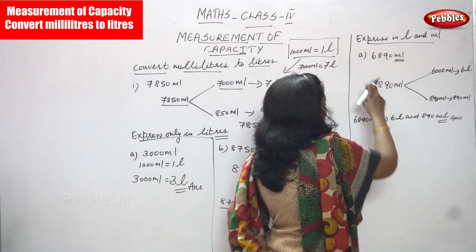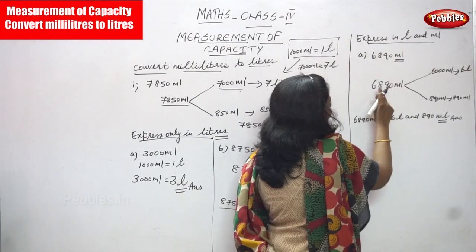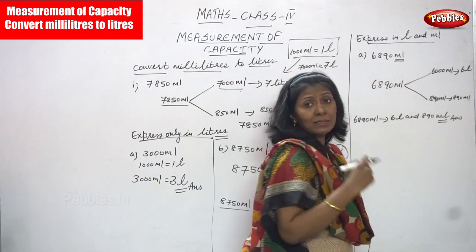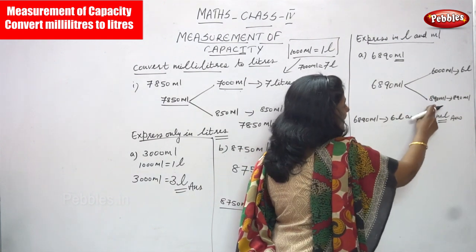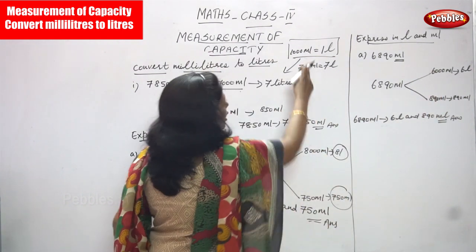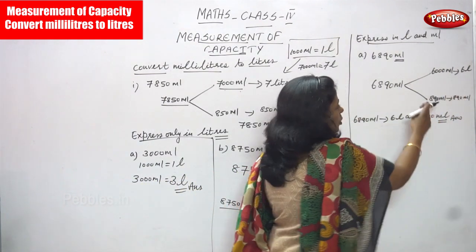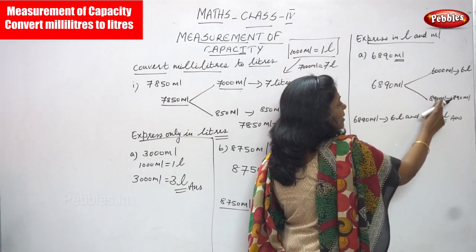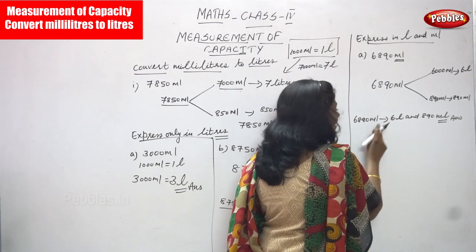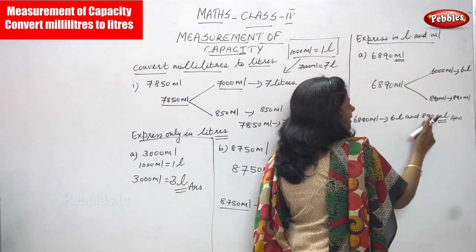For 6890 ml: separate it into 6000 ml and 890 ml. 1000 ml equals 1 liter, so 6000 ml equals 6 liters. The remaining 890 ml is written as it is. So 6890 ml is converted into 6 liters and 890 milliliters.